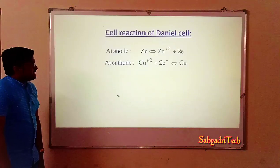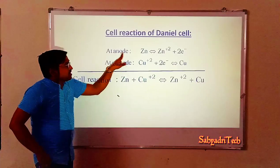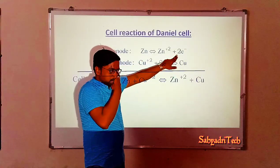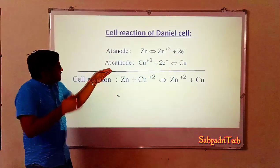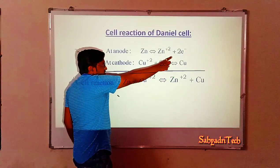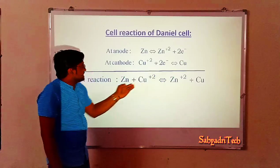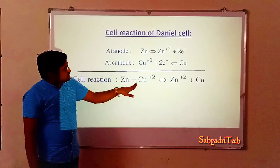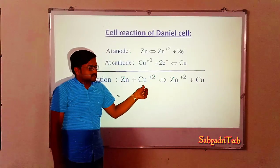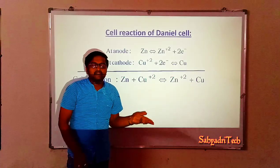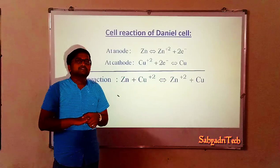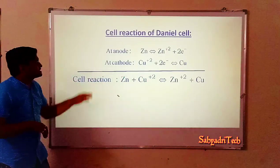Coming to the cell reactions: at the anode, oxidation takes place — zinc atoms of the electrode undergo oxidation to give Zn²⁺ and lose two electrons. These electrons reach the copper electrode through the external circuit, and at the cathode, copper ions of the solution are reduced to copper. The net reaction is: Zn + Cu²⁺ → Zn²⁺ + Cu. Zinc atoms undergo oxidation while copper ions undergo reduction. This spontaneous redox reaction is the basis for the generation of electrical energy.